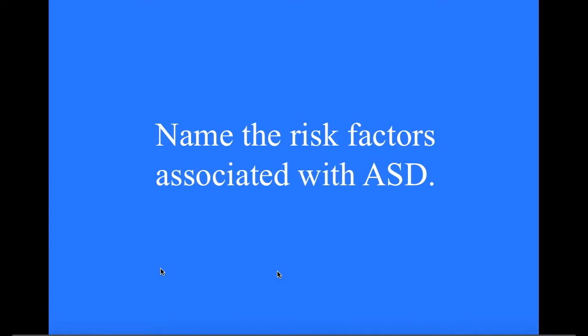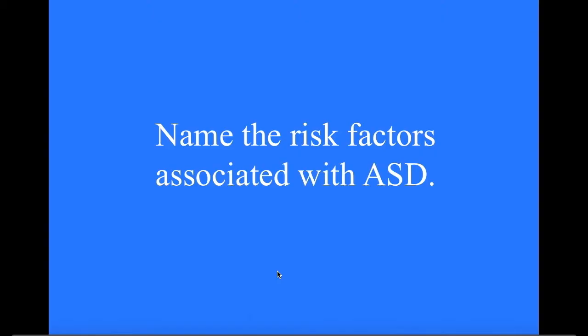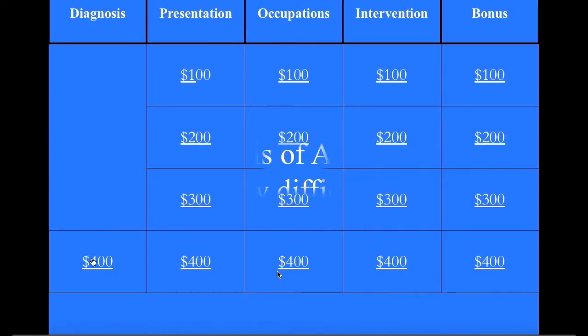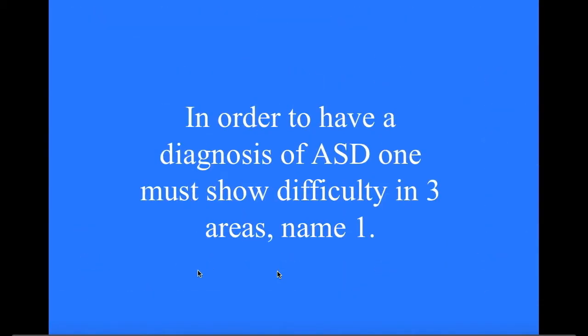Diagnosis for 300: Name the risk factors associated with ASD. What are genetic and environmental risk factors? Correct — these increase one's chances of developing ASD. Examples are the age of the parents, multiple pregnancies, and genetics.